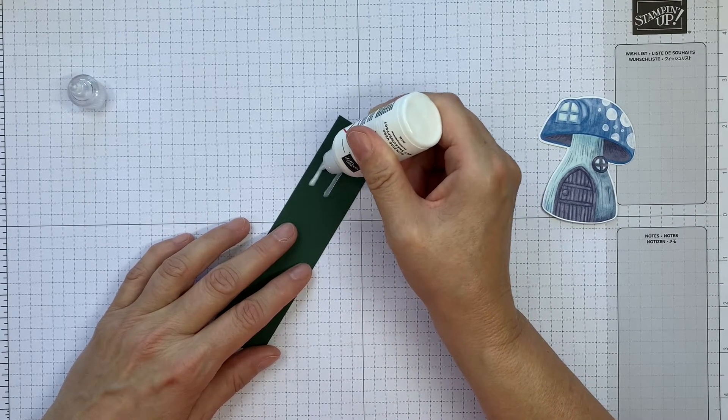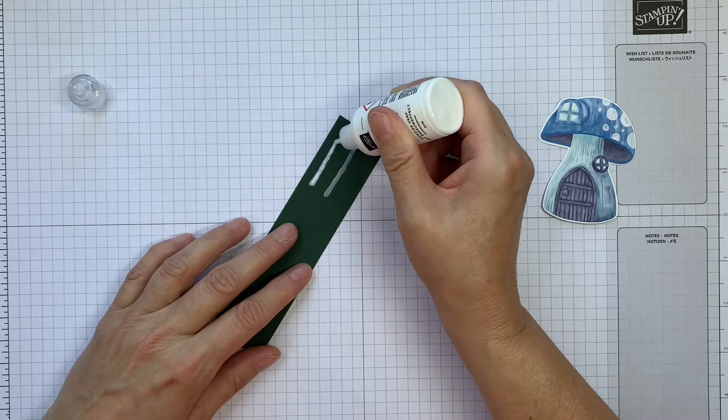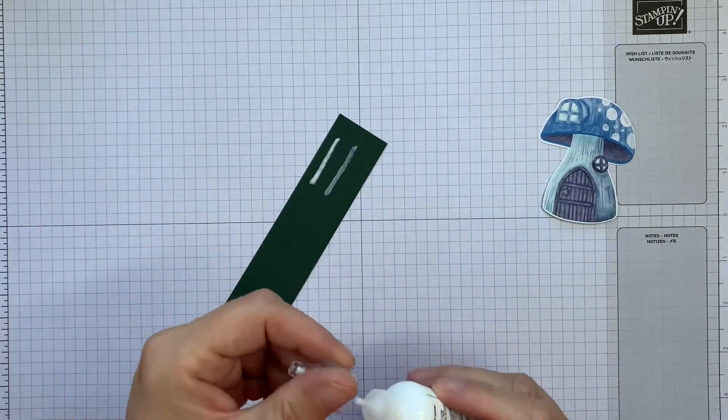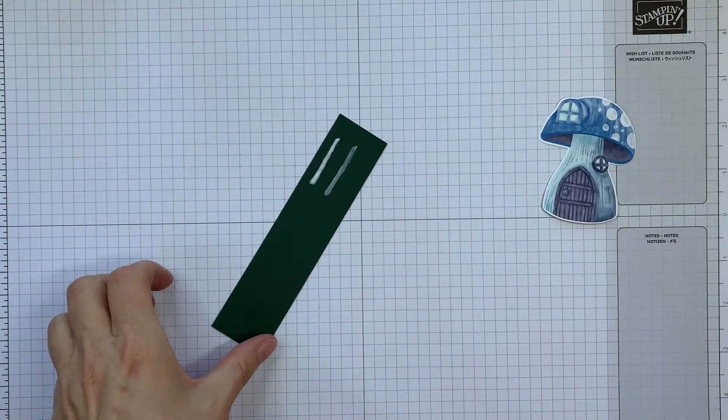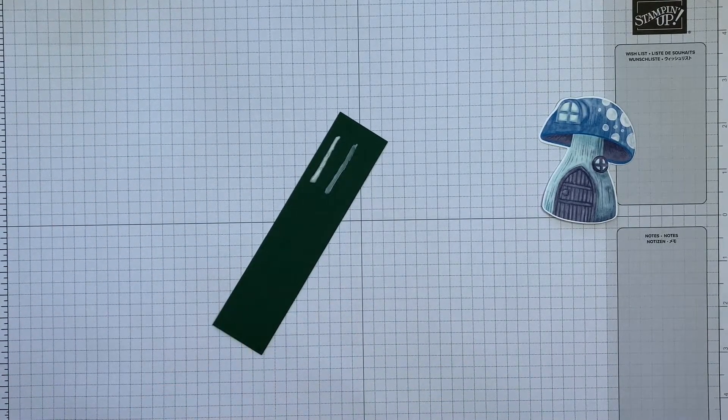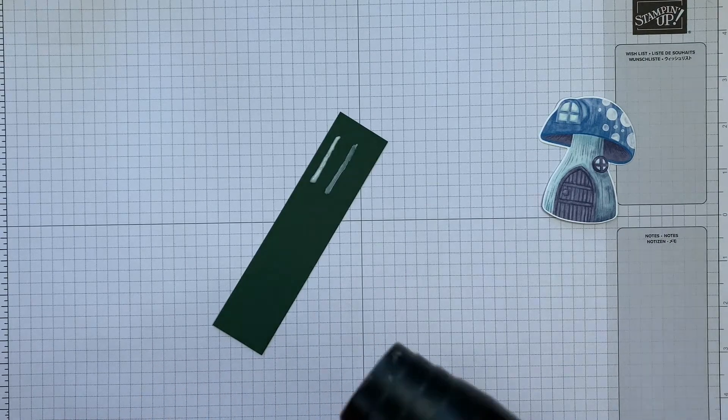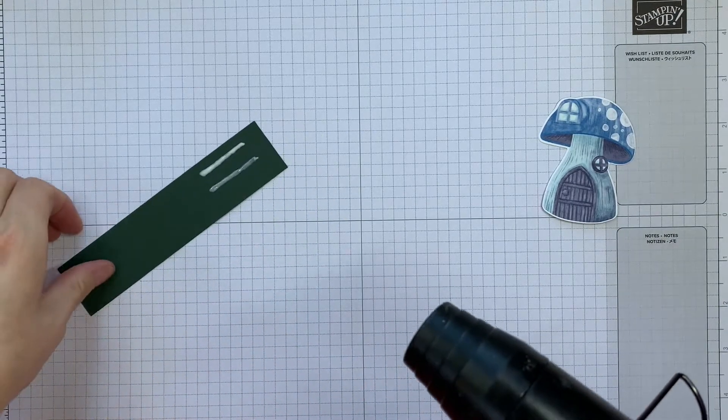If I do a thick line along like that and a thinner one like that, and then heat it, we can see what the difference looks like. So I want to get my heat tool going. This is going to be a bit noisy, so apologies for that.